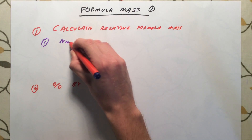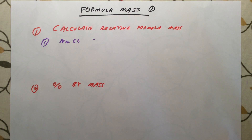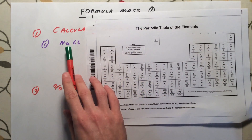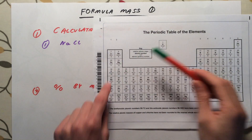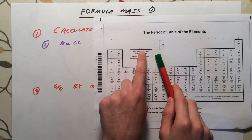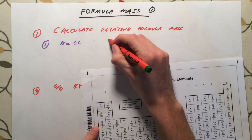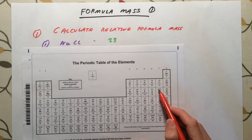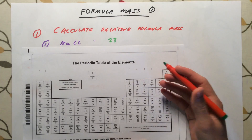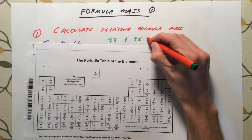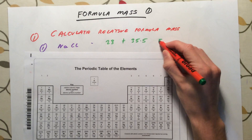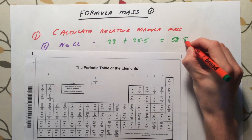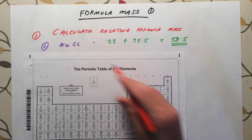First example: sodium chloride, NaCl. We need to work out the atomic mass for the atoms and add them together. Sodium has a relative atomic mass of 23. We add that to the relative atomic mass of chlorine, which is 35.5. Working this out gives us an answer of 58.5. That is our relative formula mass for NaCl, sodium chloride.